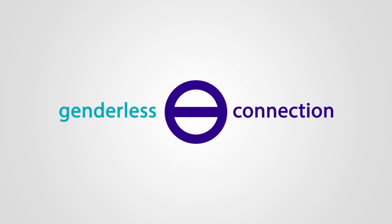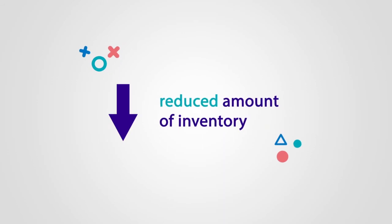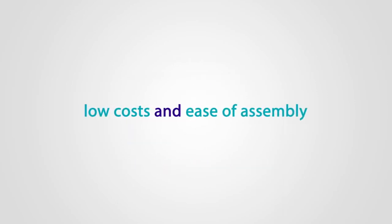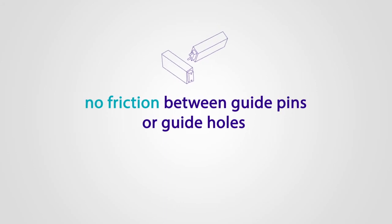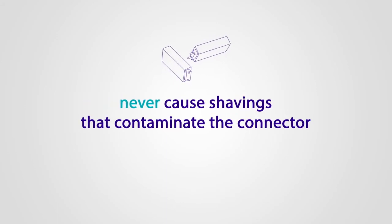This feature gives three advantages. Number one, there is no distinction of gender, which reduces variety of the cable assemblies, therefore reducing the amount of inventory. Number two, the connector has fewer component parts, which leads to low cost and ease of assembly. Number three, no friction between guide pins or guide holes. Air EB will never cause shavings that can contaminate the connector.